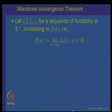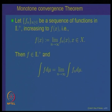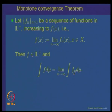The monotone convergence theorem states: let f_n be a sequence of functions in class L plus — that is, non-negative measurable functions — increasing to a function f(x) at every point. Then f belongs to L plus, and the integral of the limit f dμ equals the limit of the integrals of f_n dμ. This is the first important theorem about convergence of sequences of non-negative measurable functions and their integrals.